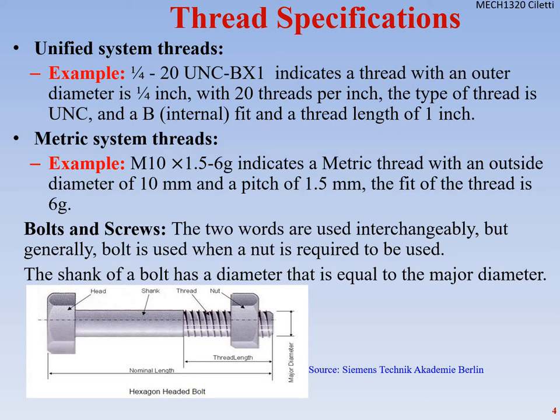If we look at the metric labeling, we have M10×1.5-6G. That indicates a metric thread with an outer diameter of 10 millimeters, a pitch — the distance between threads — of 1.5 millimeters, and a thread fit of 6G. There's a whole chart you can go through, and you can also learn to read the stamps on the ends of bolts.